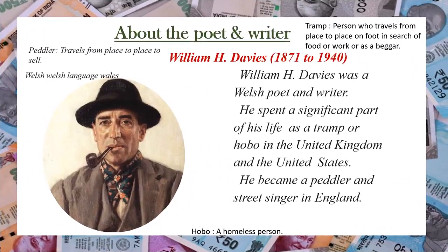Let us know about the poet and writer William H. Davies. He was born in 1871 and died in 1940. He was a Welsh poet and writer — that is, he wrote in Welsh, the language spoken in Wales, near England in the UK. He spent a major part of his life as a tramp or hobo, travelling from place to place on foot in search of food or work, even begging in both the UK and USA. He also became a peddler and street singer in England, travelling from place to place to sell goods.